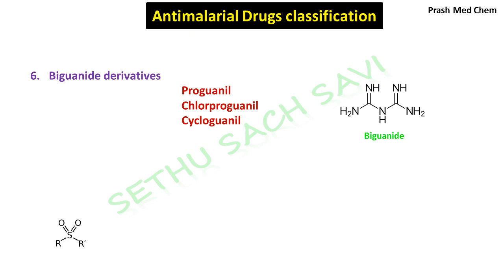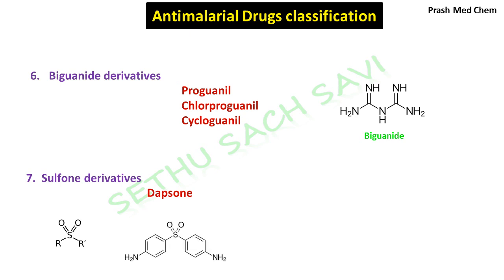Next, this is a sulfone group where a sulfur atom is attached to two oxygen atoms and R groups. Dapsone is a very commonly used anti-leprotic drug — it is a sulfone derivative which has also got anti-malarial action. In the structure of Dapsone, both R groups are replaced by an aminophenyl group. That is why Dapsone is called diaminodiphenyl sulfone, or in short, DDS.